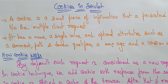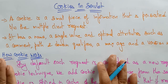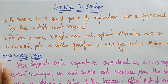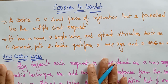Now coming to the next topic, it is cookies. In the previous video, I explained about the session. There are four techniques used in session tracking: cookies, hidden form fields, URL rewriting, and HTTP sessions. Cookies is one of those session tracking techniques.